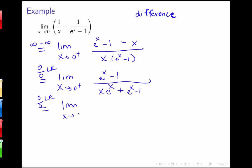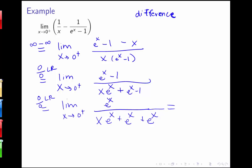Applying L'Hôpital's rule again, the derivative of e to the x minus 1 is just e to the x — the 1 disappears. The denominator requires the product rule again: x times e to the x plus e to the x, plus the derivative of (e to the x minus 1) which is e to the x, giving x·e^x plus e^x plus e^x. Plugging in 0: the numerator is e to the 0 = 1, and the denominator gives 0 + 1 + 1 = 2. So the final limit is 1/2.